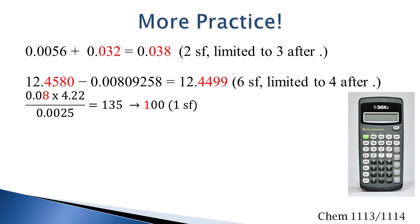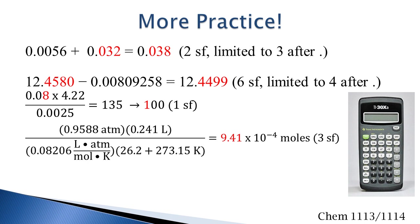In this multiplication and division problem, the first number has one significant figure. The second number in the numerator has three significant figures, and the number in the denominator has two significant figures. In the calculator, this came to 135, but since we are limited to one significant figure, this number becomes 100 without any decimal. In the following multiplication and division problem, we're limited to three significant figures as shown in the top number, so our final answer will have three significant figures.